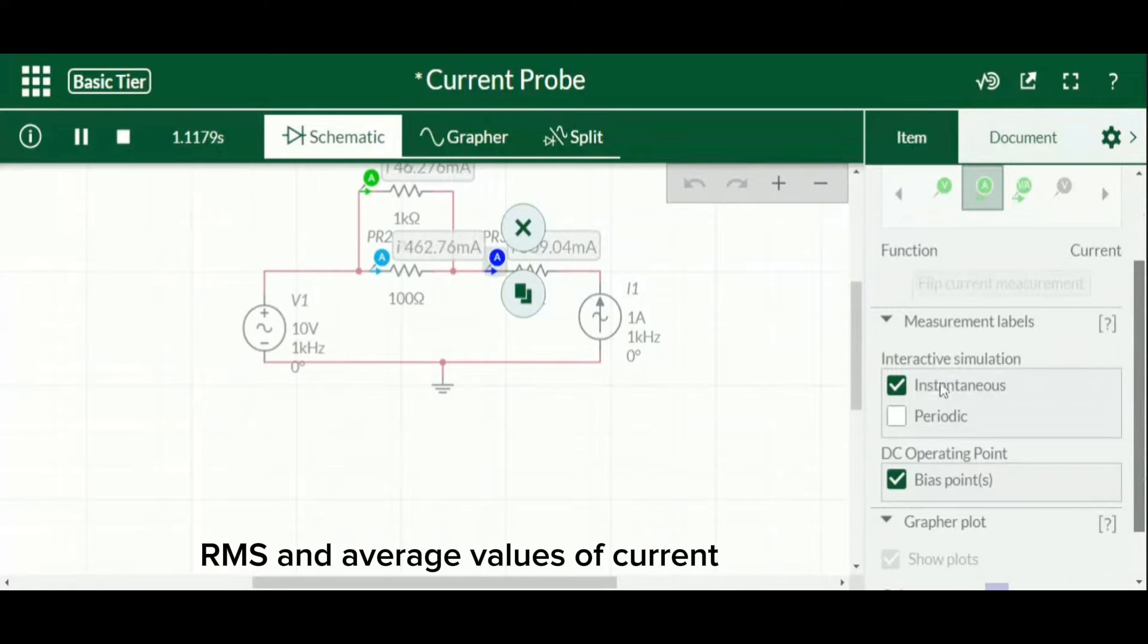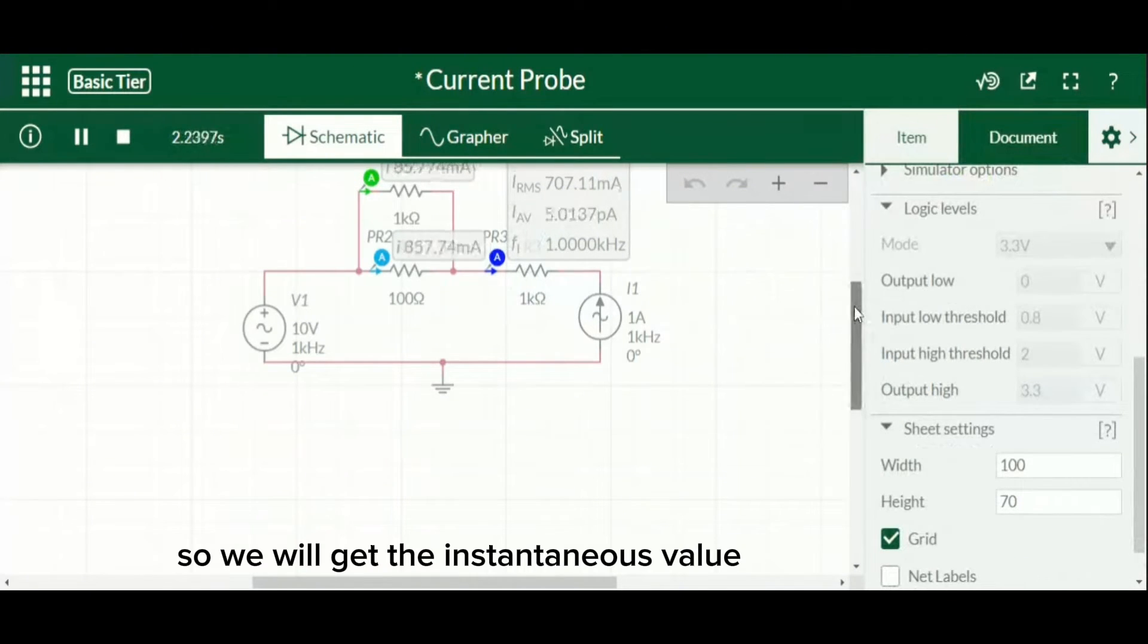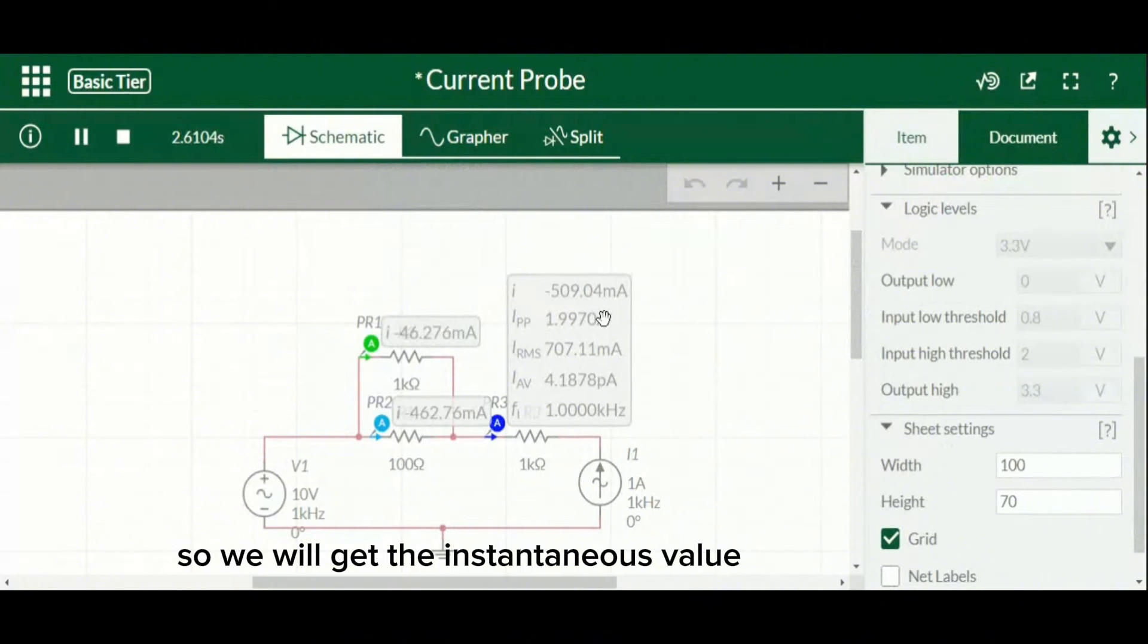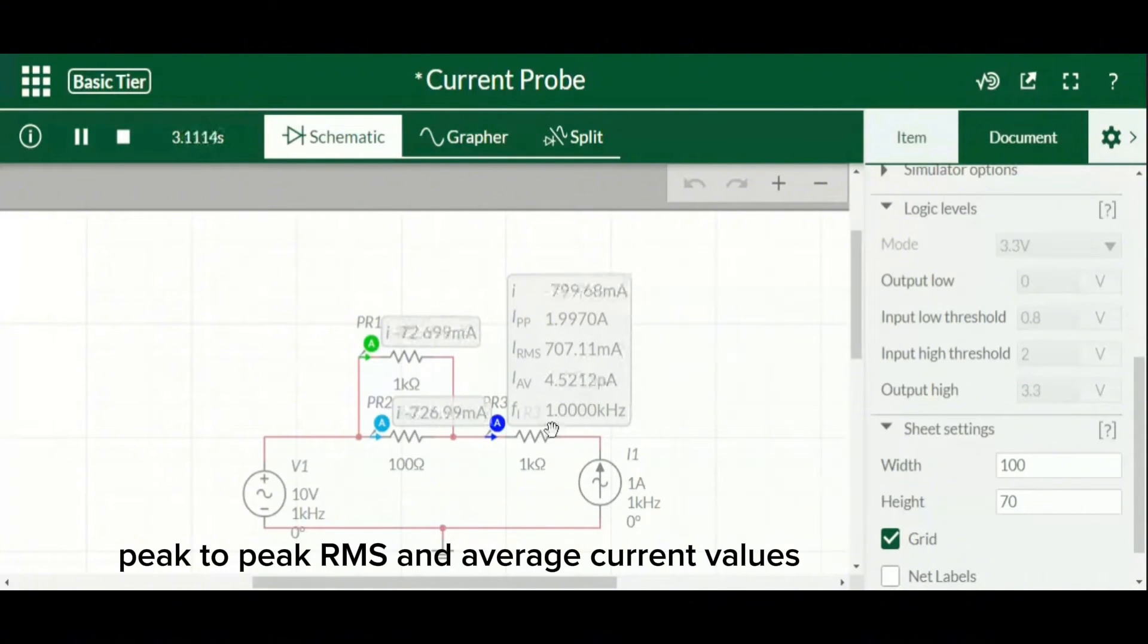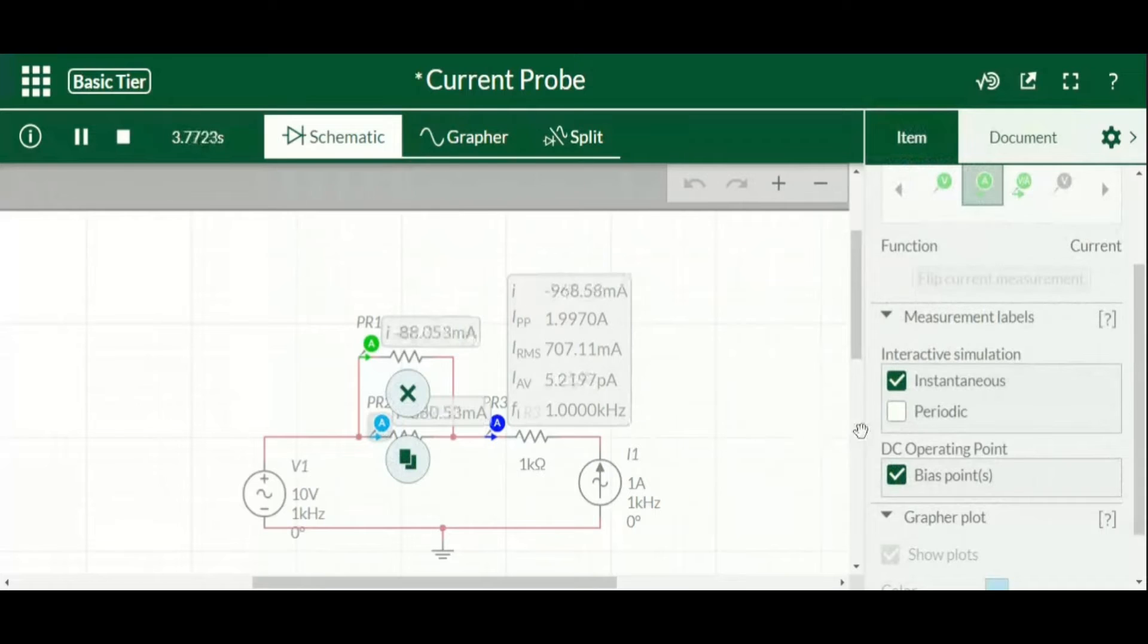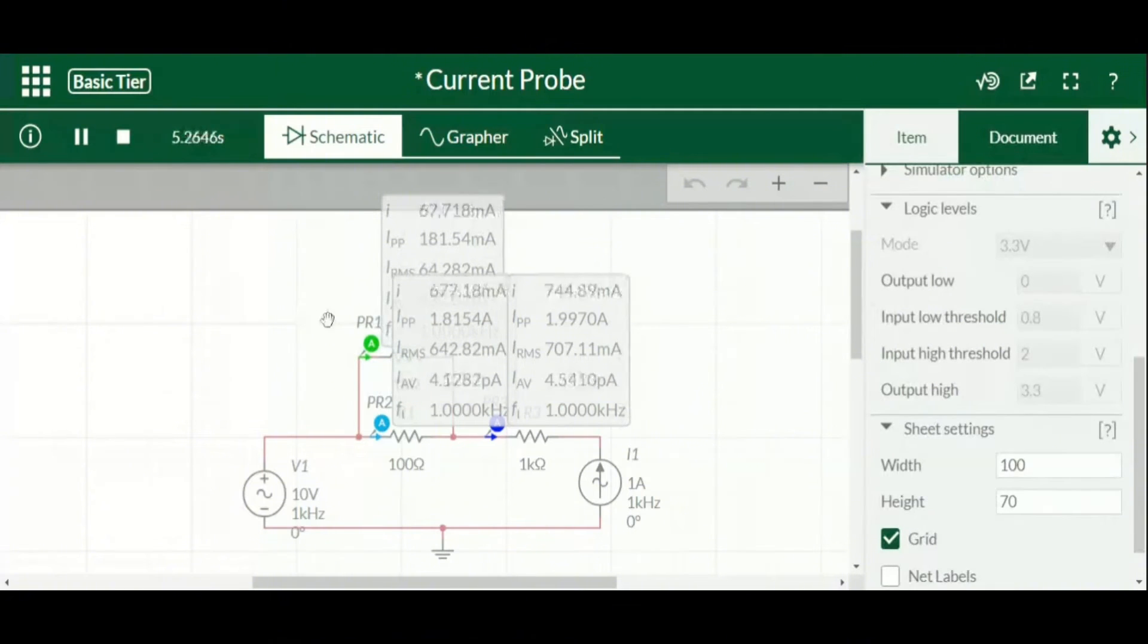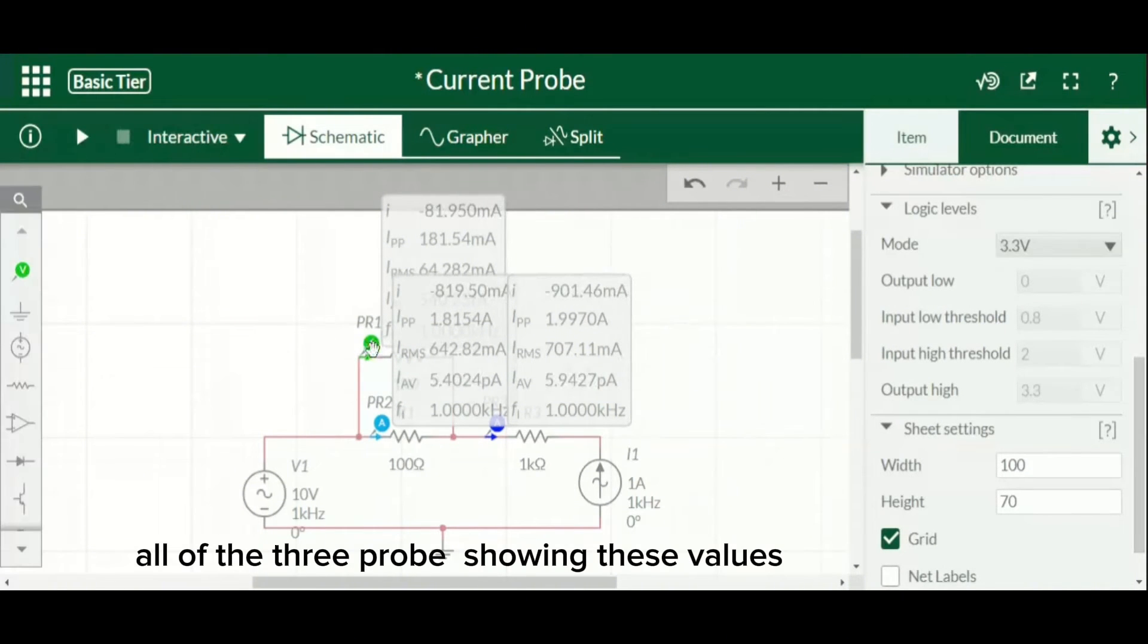So we will get the instantaneous value, peak-to-peak, RMS, and average current values, and frequency is given in last. Now change it to periodic as well. All of the three probes are showing these values: peak, peak-to-peak, RMS, and average values.